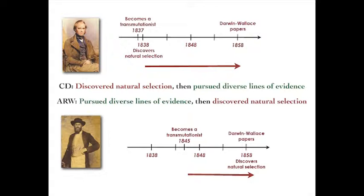So Darwin discovers natural selection first, and then pursues diverse lines of evidence for it. Wallace, in contrast, pursues diverse lines of evidence — as exemplified in Wallace's species notebook that I just recently published — and then finally, after ten-plus years of labor, hits upon the solution.